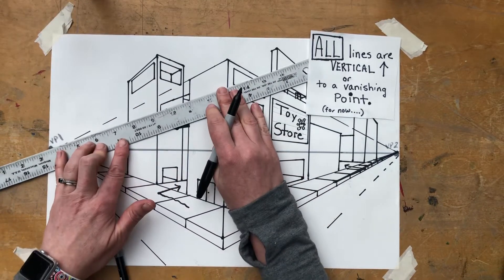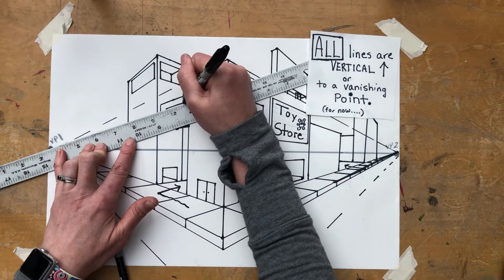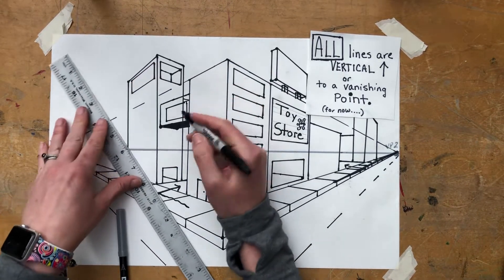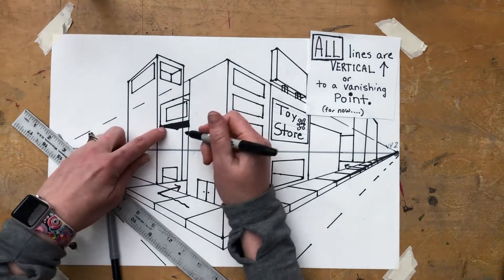Vertical line to vanishing point one again. Connect it with a vertical line. And now I have a window in my skywalk that you can see through.